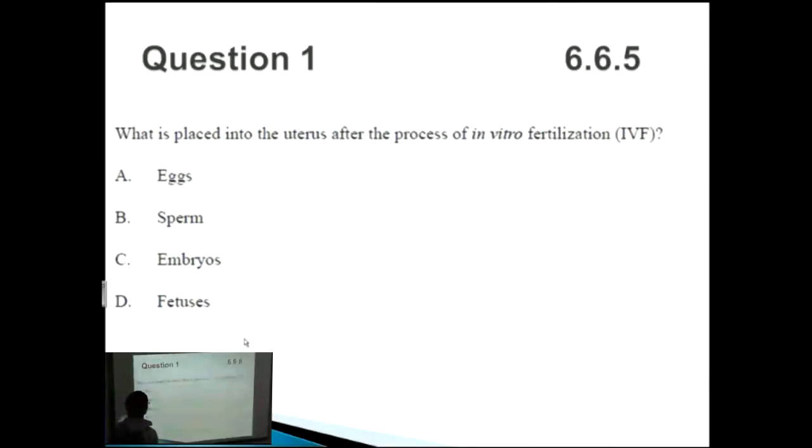You need to know that with IVF what happens is they mix a sperm and they mix it with an egg and they get a zygote afterwards which later becomes an embryo. It's really important to know that the whole purpose of IVF is to give a baby at the end. So you can't just put a sperm in there because the sperm isn't a baby. You can't just put an egg or an ovum in there because that's not a baby. So straight away you can get rid of A or B.